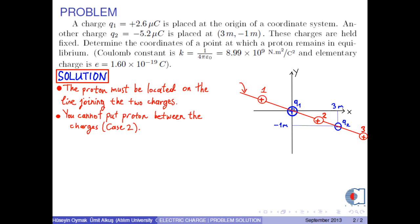You cannot put the proton between the charges. Because, as shown in case 2, the Coulomb force on the proton due to Q1 is a repulsive force, and the force on the proton due to Q2 is an attractive force. According to this configuration, the proton moves towards Q2.